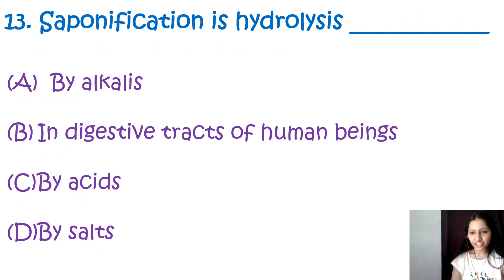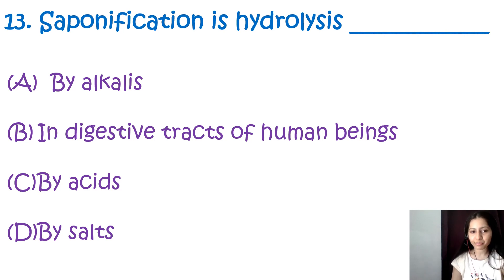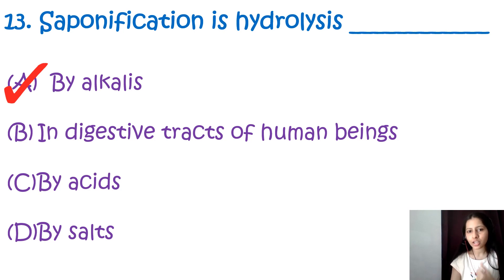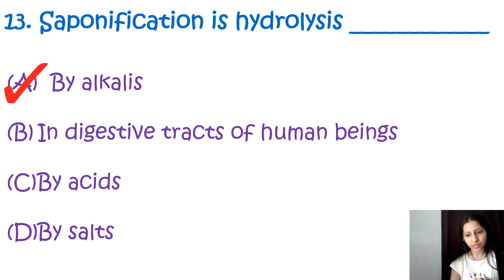Question number 13: Saponification is hydrolysis by — alkalis, in the digestive tract of human beings, by acids, or by salts. The correct option is A, by alkalis. Saponification is a process of hydrolysis that occurs specifically by the action of alkalis such as sodium hydroxide and potassium hydroxide on esters, particularly triglycerides, to produce soaps and glycerol.